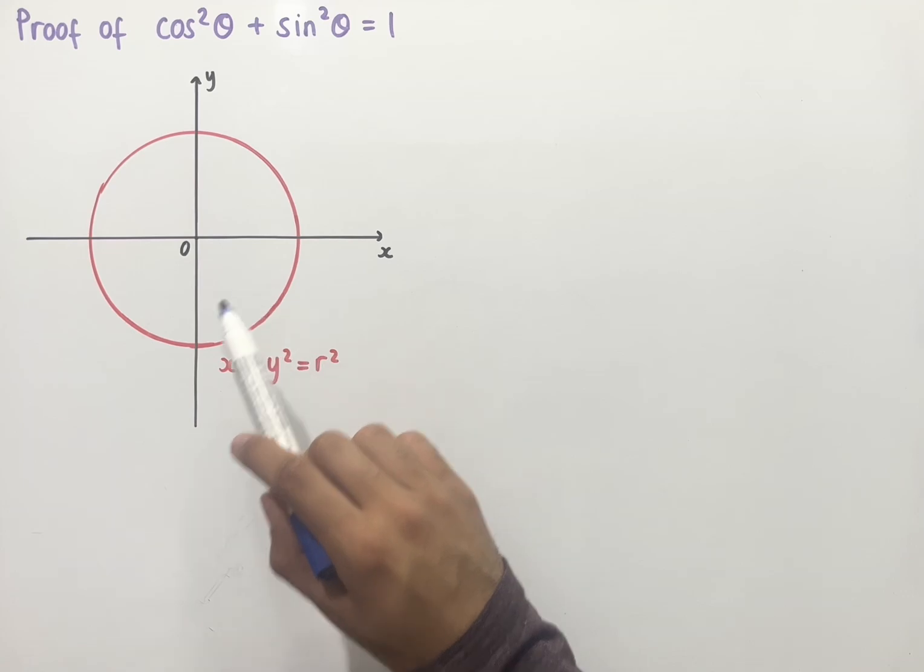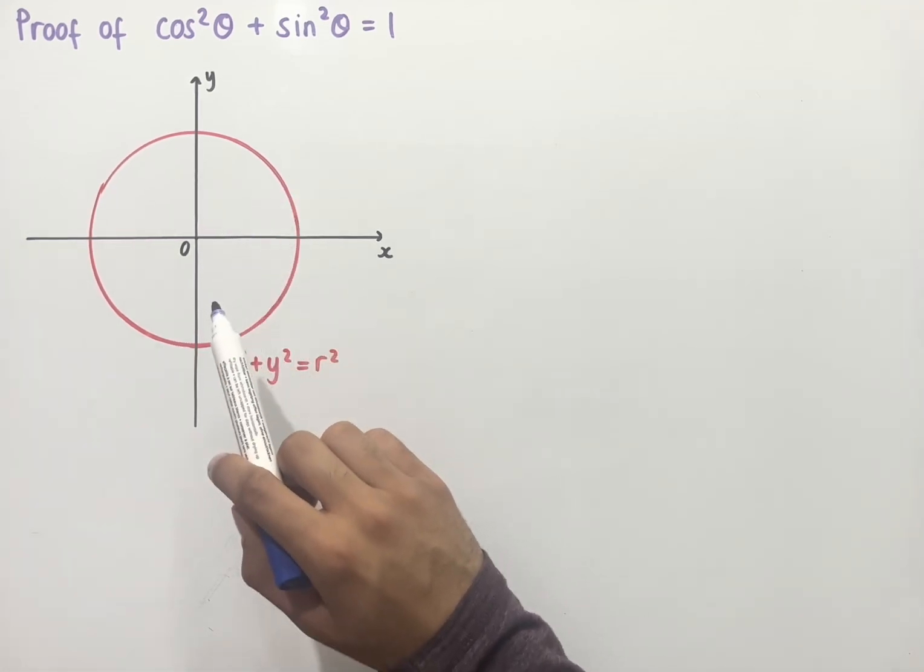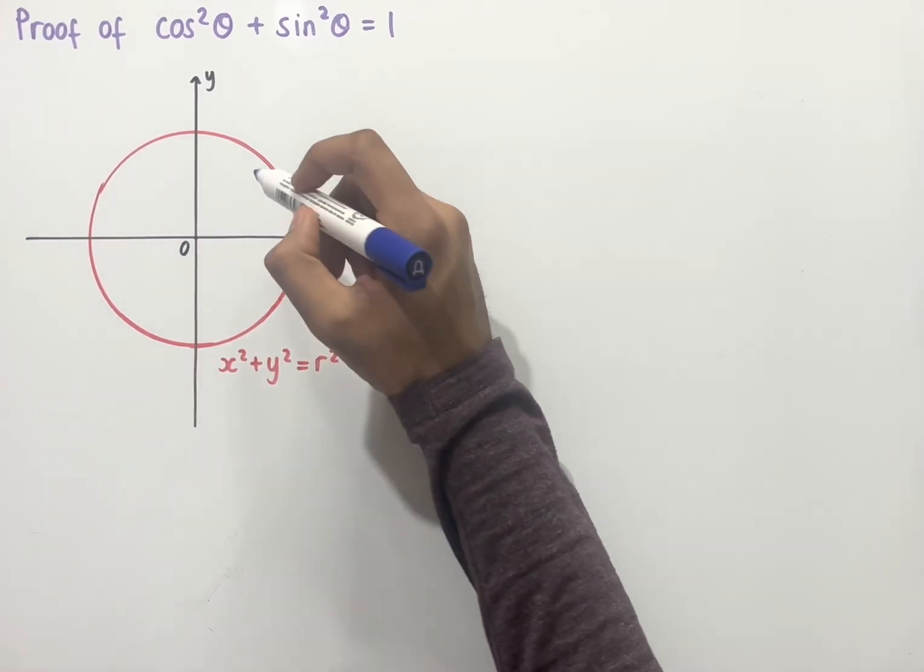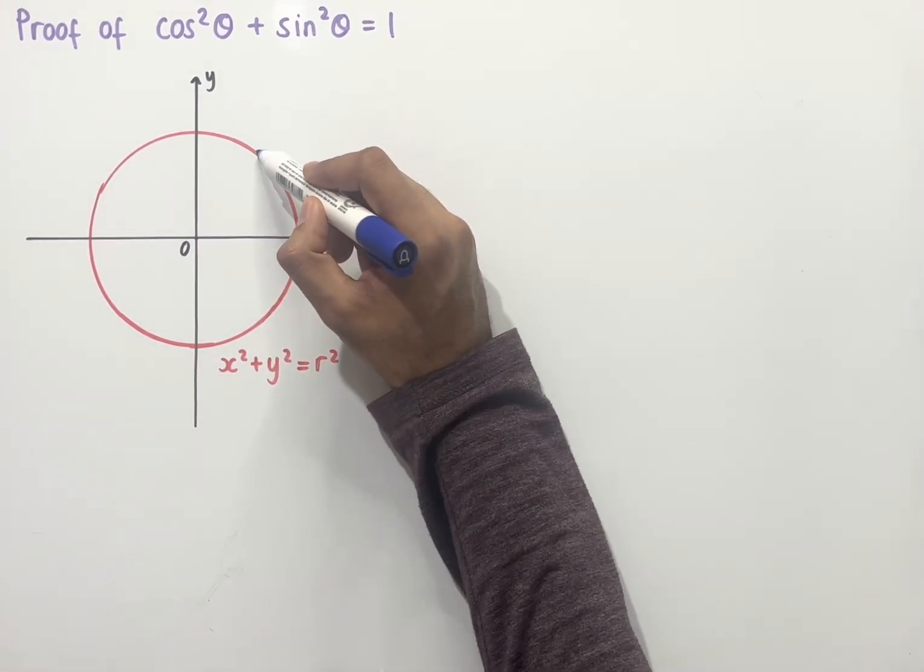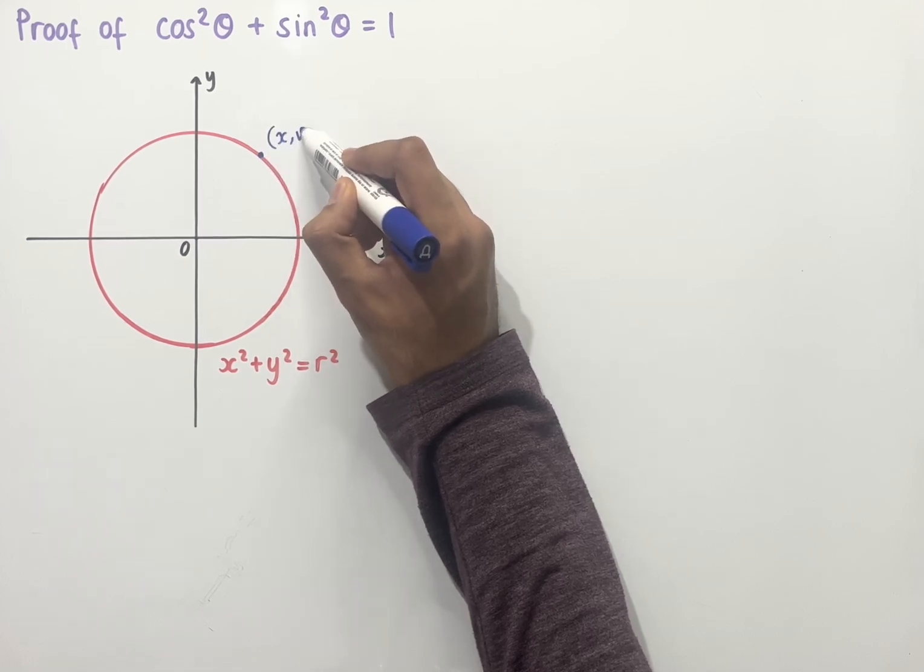Now we could pick any point on the circumference of this circle, but for convenience we'll choose the positive quadrant that has positive x and positive y coordinates. So let's say we have a point on the circumference of the circle here. We'll label this as having coordinates x and y.